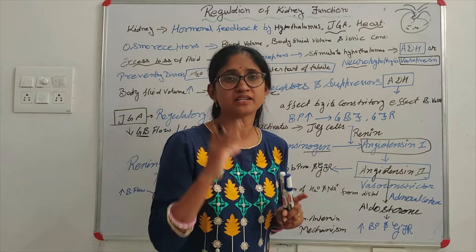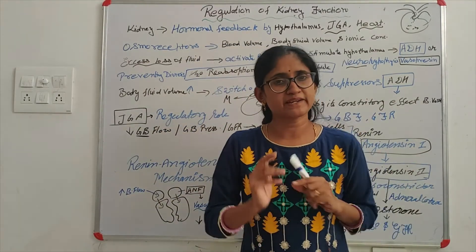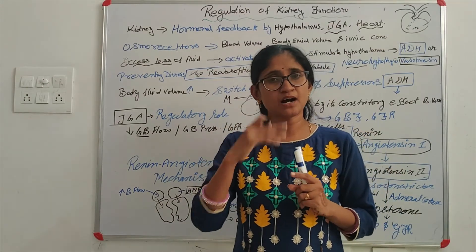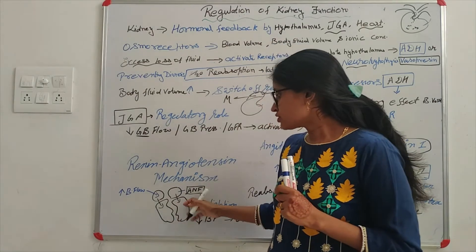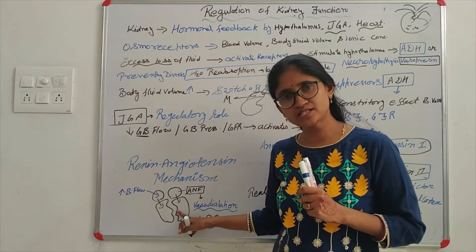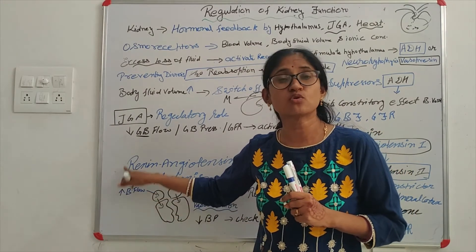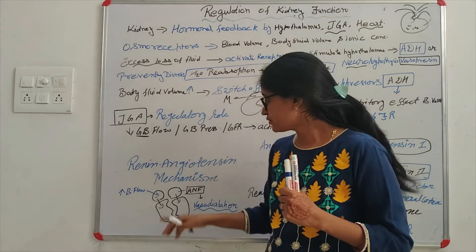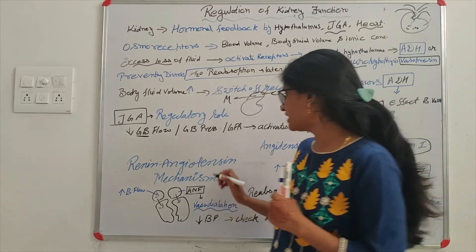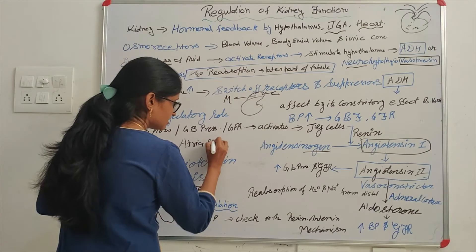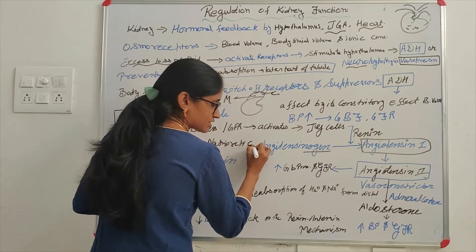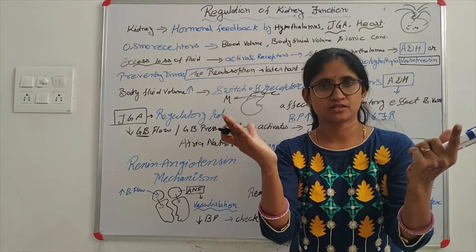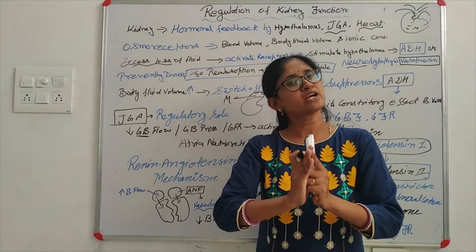The third and last part is the heart. What is happening in the heart? We discussed the mechanism called Renin-Angiotensin Mechanism. Now let's talk about the heart's role. In the heart there are two atria. When blood flow increases, the atria experience more pressure and more flow. What do we do? ANF is released. ANF's full form is Atrial Natriuretic Factor. Atrial Natriuretic Factor causes vasodilation — blood vessels dilate — because the pressure and flow are already high, so it increases the diameter.